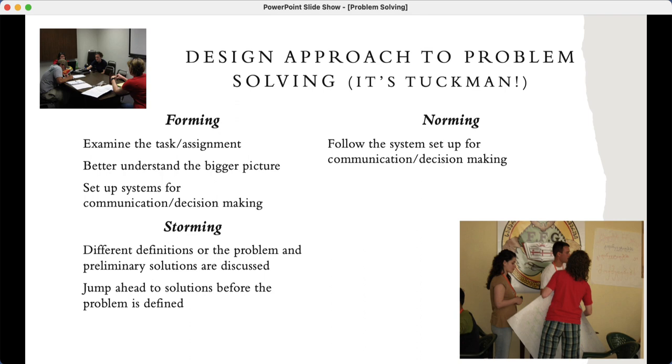So looking at design approach to kind of the next thing comes is norming, which is interesting. You follow the system made that you set up for communication and design. And then within the performing when there is a crisis, when there is a problem, this can happen again with task or relationship. So then you go back to that system. How do you deal with this?